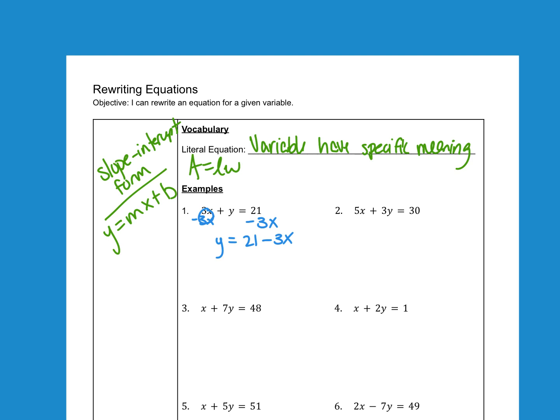We could just leave it as 21 minus 3X, or because we're looking at our next lesson is to graph, we can write it in this form. We want the M and the X to come first, and the number by itself, which would be B, to come last. So in that case, it would look like Y equals negative 3X and a positive 21. Notice that that minus sign was in front of the 3, it still stayed in front of the 3. The 21 was positive, the 21 is still positive. Make sure we watch for our signs.